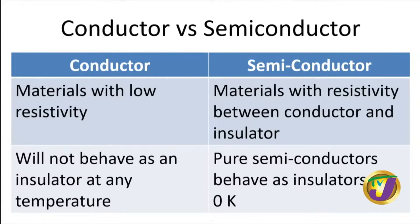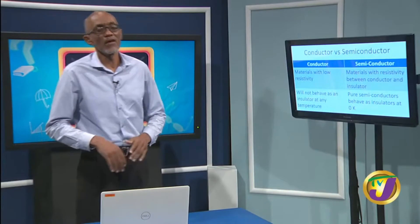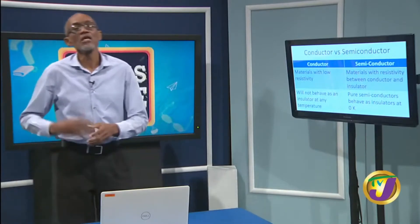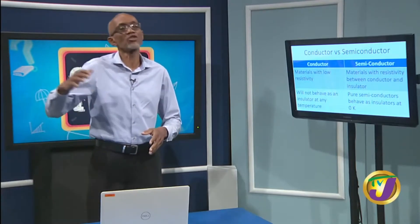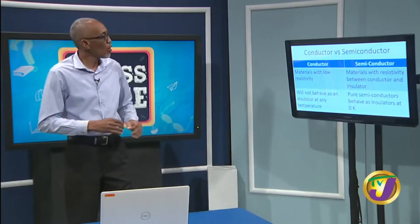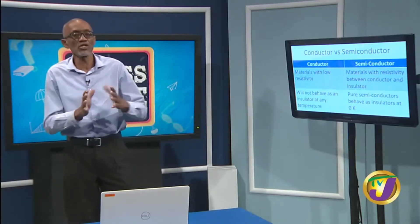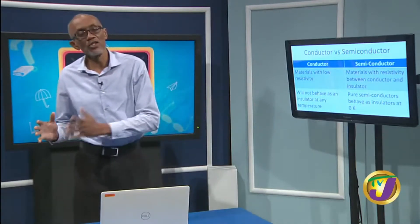Conductors are normally materials with low resistivity. The resistivity is a factor that tells you how resistant a material is to the flow of current through it. If a material has a low resistivity, it allows current to flow through it readily. If it has a high resistivity, it doesn't allow current to flow through it. Insulators have extremely high resistivities — they just don't allow current to flow through them. However, semiconductors have resistivity somewhere between a conductor and an insulator.